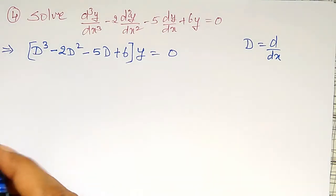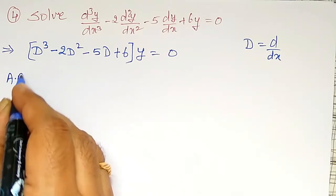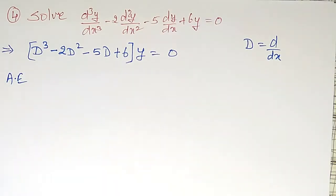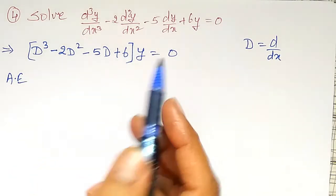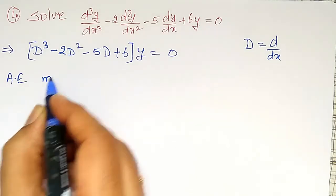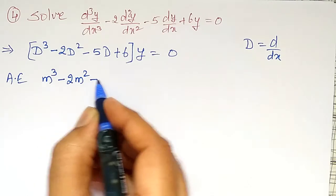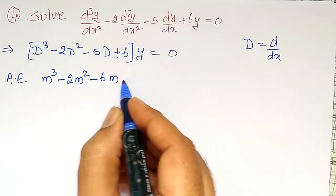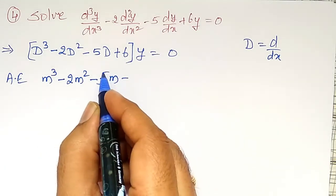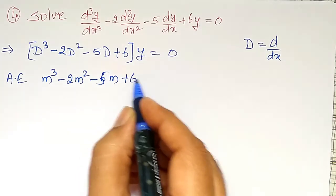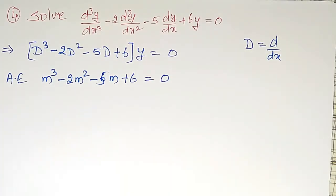Using this, I can write the auxiliary equation by replacing D by m in this bracket and equating it to zero. That is, m³ - 2m² - 5m plus 6 equal to zero.